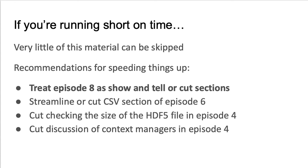Every episode in this workshop builds on previous episodes, making it challenging to see what can be skipped if you're running short on time. Here are a few recommendations of corners you can cut. By far the easiest place to make up time is in episode 8 — learners gain a lot just by seeing what is available, even if they don't get to play around with it, so you can conduct it as a show and tell, especially the exercises. Although less significant time-wise, the section on writing and reading CSV files at the end of episode 6 is not important for the rest of the curriculum and could be skipped. Likewise, checking the size of the HDF5 file and the discussion about context managers in episode 4 can be skipped.